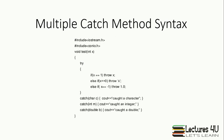Here we can see that the try block catches for exceptions and throws different exceptions on different conditions, and has multiple catch statements to catch multiple throws, like caught a character, caught an integer, or caught a double.